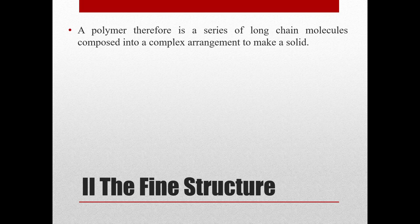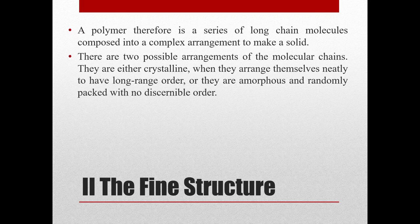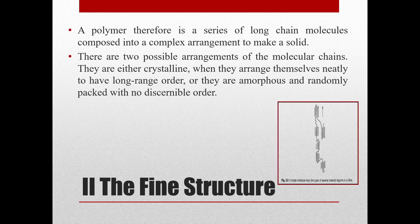A polymer is a series of long chain molecules composed into a complex arrangement to make a solid. There are two possible arrangements of the molecular chains: they are either crystalline — when they arrange themselves neatly to have a long range order — or they are amorphous, randomly packed with no discernible order. Any polymer will typically contain both crystalline and amorphous regions, and therefore they are called semi-crystalline. As seen in the diagram, one molecular chain passes through many crystalline regions as well as amorphous regions.